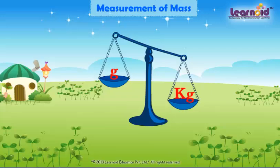Gram is used to weigh light objects. Kilogram is used to weigh heavy objects.